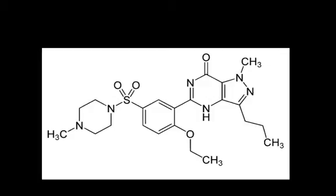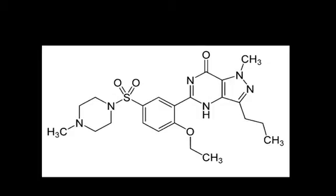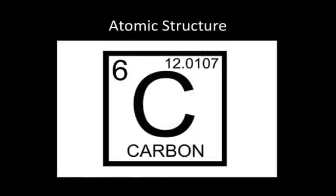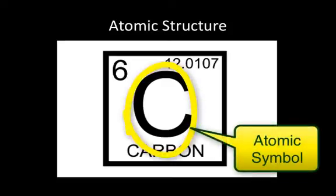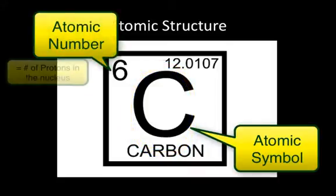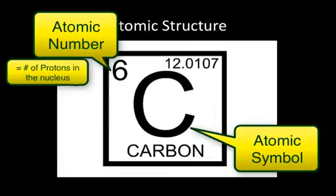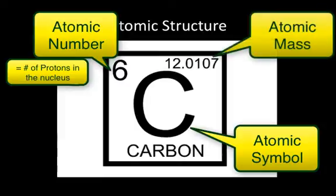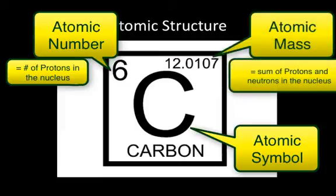Before talking about complex molecules and compounds, let's quickly review elements. To get information about each element, you'll need the basics on what each symbol on the chart represents. Here I've selected carbon — its symbol is the uppercase C. It's number six on the chart; this number equals the number of protons in the nucleus, called the atomic number. The other number is the atomic mass — the sum of the protons and the neutrons in the nucleus.